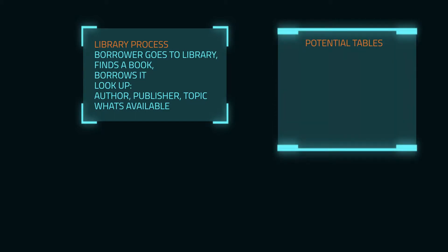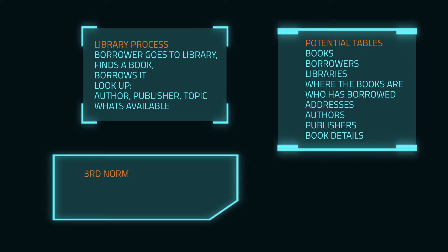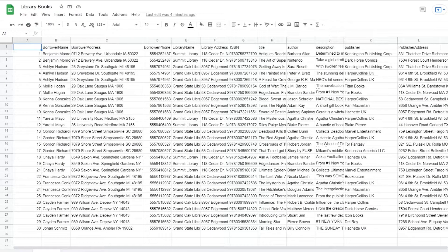We'll need to store information like books, borrowers, libraries, where the books are at, who has borrowed what book, various addresses, authors, publishers, and details about the books. So let's say a library has all their data stored on an Excel sheet, and we want to get this into a proper database. We'll do this by formatting the data into third normal form, a method to reduce redundancy and maximize integrity. Here's a spreadsheet of all the raw data that the libraries collect.